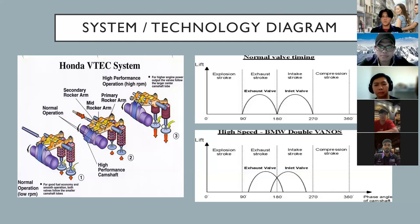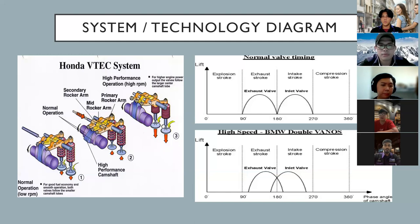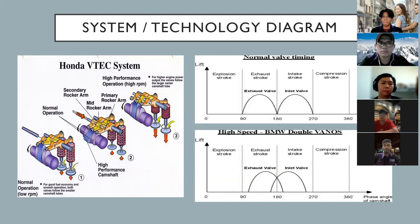I will also explain how VVT helps increase efficiency. Usually during the four-stroke engine combustion cycle, the exhaust and intake valves open one after the other without any overlap, as shown in the normal valve timing graph. As engine speed increases, there is less time for exhaust and intake air to enter and leave the cylinder. This is where VVT helps — the timing can be changed to close the exhaust valve later and open the intake valve early, so the valves are actually open at the same time, creating an overlap. In the last graph, we can see the exhaust valve and the inlet valve overlap.